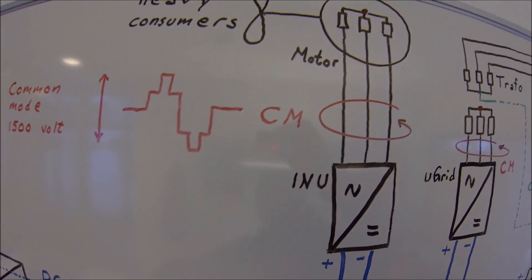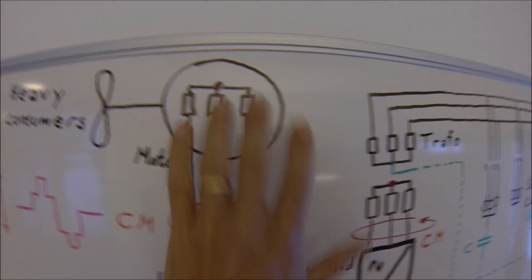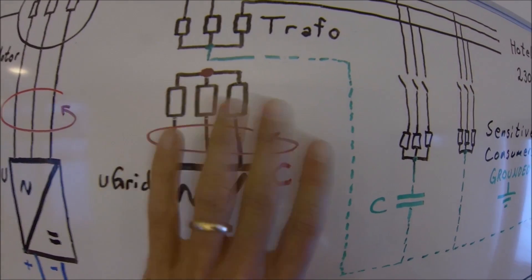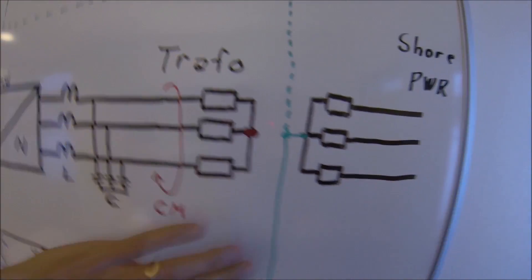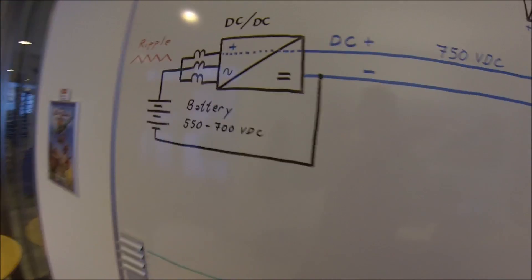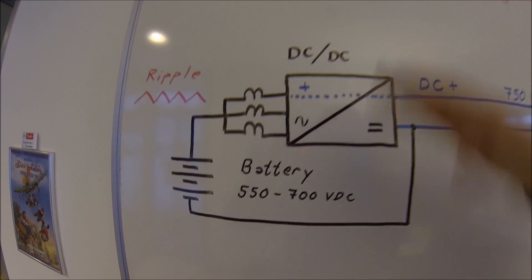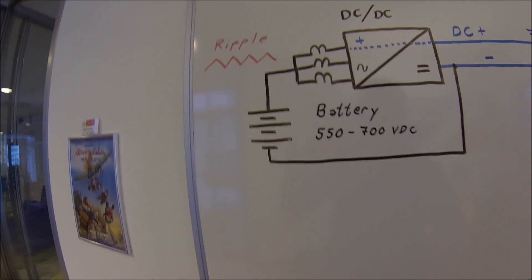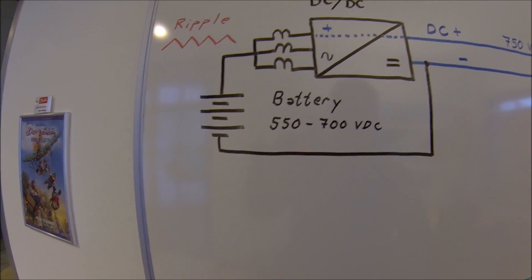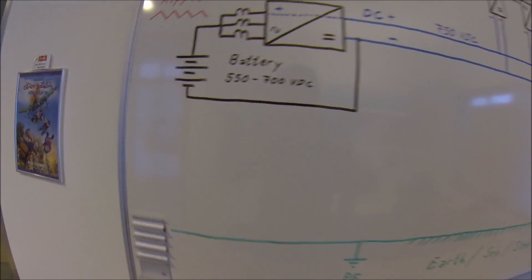You know, this common mode which you can see in our oscilloscope doesn't make any harm here on a motor, it doesn't make any harm here in a transformer or in this transformer. But if you do this to your battery, you probably will have problems with your battery management system. And here comes a challenge.